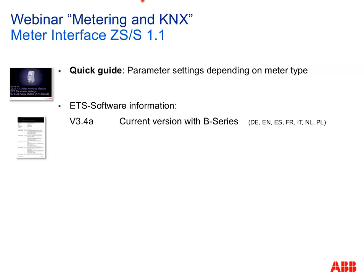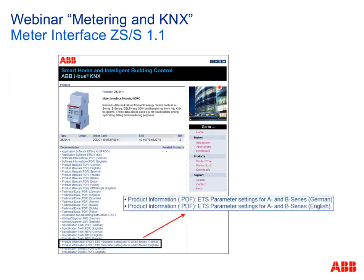The current ETS application is version 3.4A, which now also includes the B series and is available in different languages. You can find the parameter quick guide PDF on the ABB homepage at abb.com/knx, at the meter interface product page — simple but very useful.